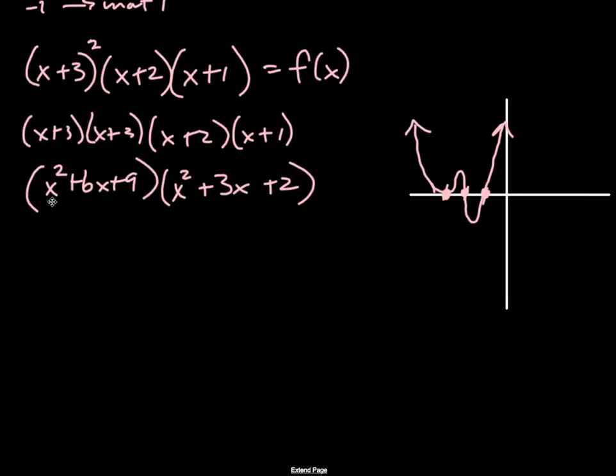Now to foil that, so x squared times x squared, x to the 4th. x squared times 3x plus 3x cubed. x squared times 2 would be a plus 2x squared. In the book, they show how to do this way, and I don't mind it.